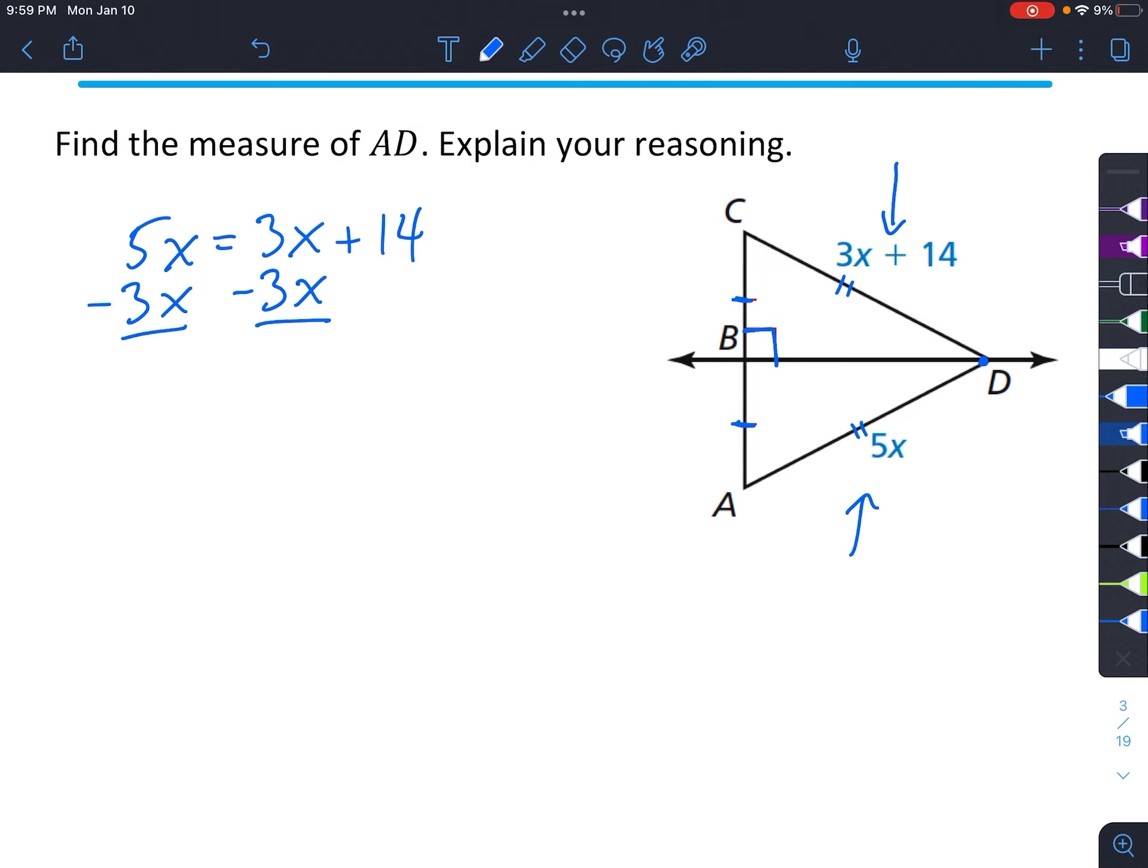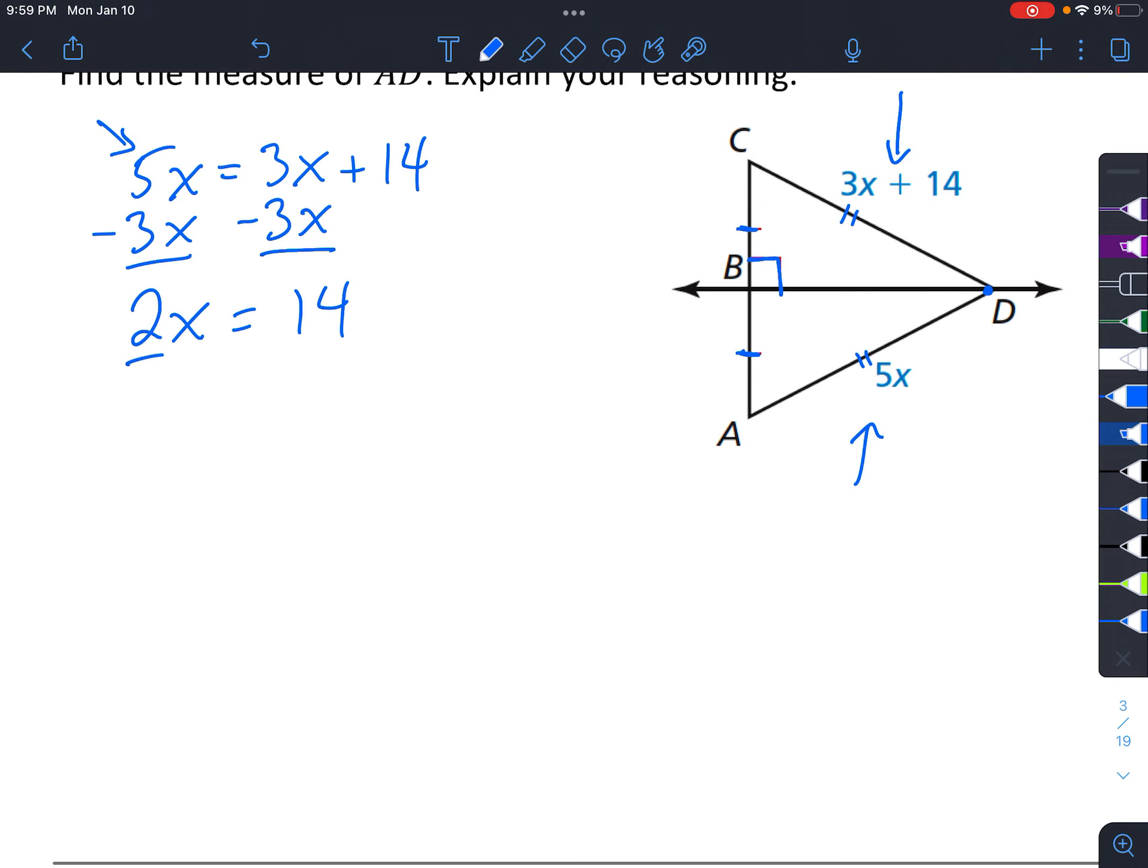The number in front essentially says how many Xs you have. So, if you have 5Xs and you take 3 of those away, you have 2Xs left. And then, the opposite of multiplying by 2 is dividing by 2. So, we get X equals 7. So, this isn't our final answer though,